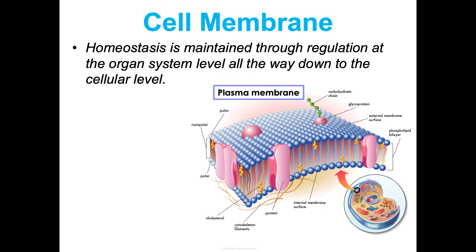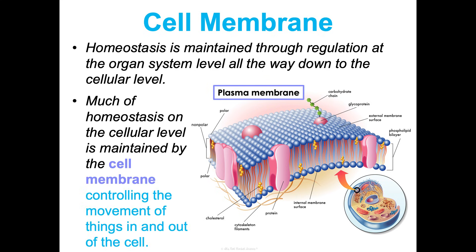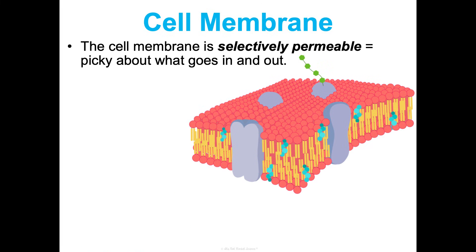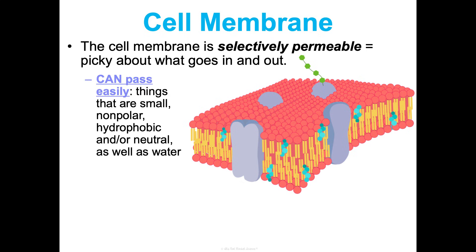On a cellular level, cell homeostasis is maintained via the cell membrane, or plasma membrane, by controlling what comes in and out of the cell. The cell membrane, because of the phospholipid bilayer and its structure, is selectively permeable — it's picky about what it lets in and out. Things that can get through easily are small molecules, non-polar molecules, hydrophobic or afraid of water, or neutral.